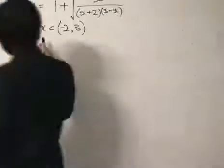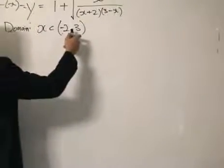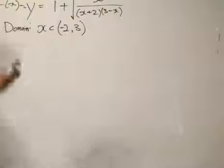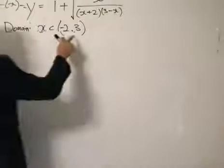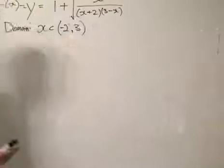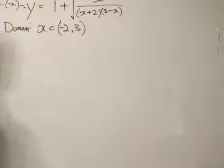And we later found out that the domain of x is minus 2 to 3, exclusive. We cannot include these two because it will get us to divide by 0 and that certainly does not exist.